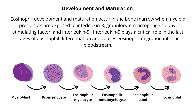The maturation of eosinophils occurs in stages. Myeloblasts first develop into promyelocytes. After this stage, promyelocytes mature into eosinophilic myelocytes. These cells then develop into eosinophilic metamyelocytes, eosinophilic bands, and finally eosinophils.